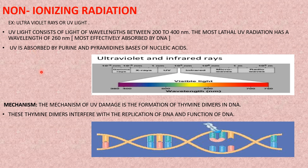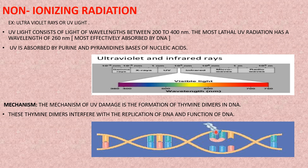UV light kills microorganisms because UV is absorbed by the purine and pyrimidine bases of nucleic acids, i.e., DNA. The mechanism involves thymine-thymine dimer formation: instead of normal complementary base pairing with hydrogen bonding in the DNA double helix, adjacent thymine bases bind to each other. This mutation occurs when DNA is exposed to UV light, forming thymine-thymine dimers.